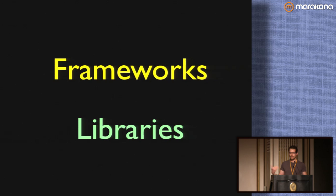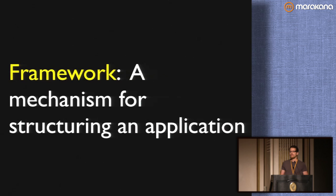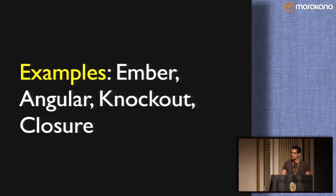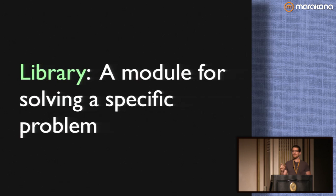Here are two large patterns for code reuse that we've probably heard thrown around a lot: frameworks and libraries. Not a lot of people actually know what the real difference is, so let's really define these terms. A framework is a mechanism for structuring an application — it's a high-level tool that gives you an entire skeleton for how to build an app, and you just fill in the gaps with your application-specific code. Examples include Ember, Angular, Knockout, and Closure — especially Ember and Angular, which are the newer tools. If you're building a large application that you want to scale, definitely check out these frameworks.